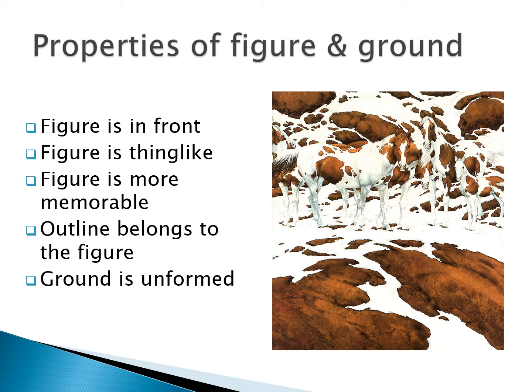Here instead of a more ambiguous picture, we have a figure where it's difficult to distinguish figure from ground. Once you see a horse kind of pop out from the background, it becomes more thing-like and more memorable, and then the background changes. That horse over to the far right was probably part of the background, but as soon as you notice it — the horse with the white head — that's a figure now.